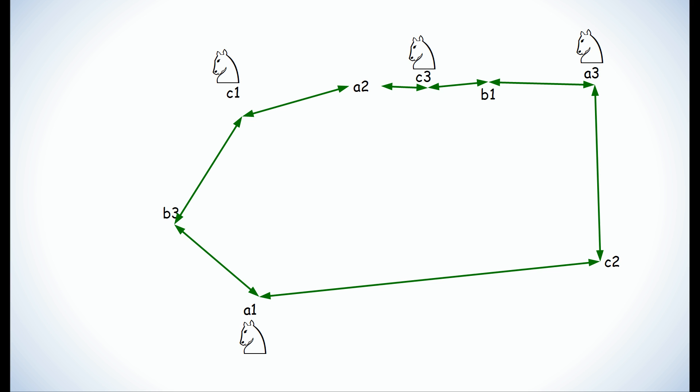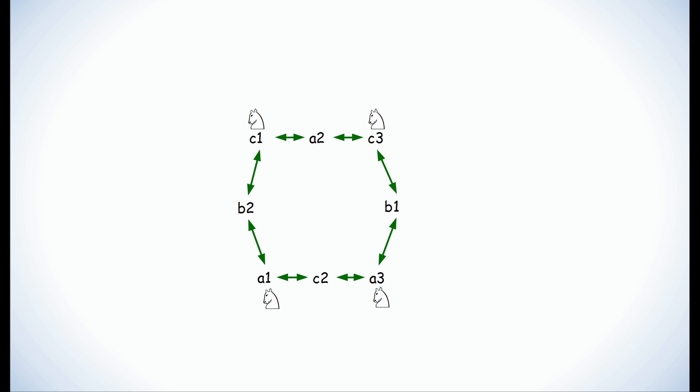And finally, what we can do is all the lengths between the different squares are the same. So we'll just renormalize this and draw it to an octagon.